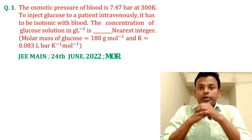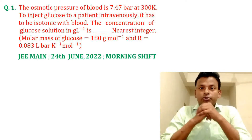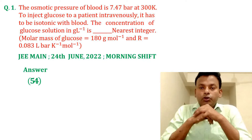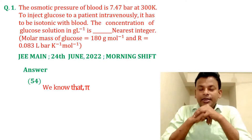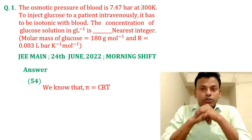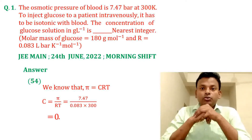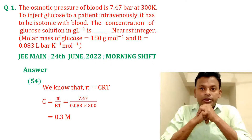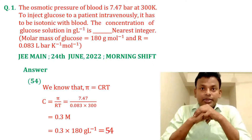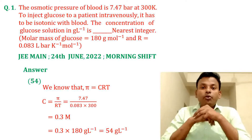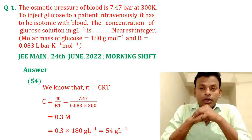This question was set in JEE Main 24th June 2022 morning shift. Answer is 54. We know that π = CRT, so C = π/RT. Putting in all values, concentration equals 0.3 molar. In gram per liter: 0.3 × 180 = 54 gram per liter. So the answer is 54.